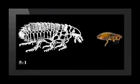Scale is a comparison of measurements between a real object and the representation or drawing of the object. If we look at the flea and its drawing, the scale is 5 to 1. This means that the drawing or representation is 5 times bigger than the real flea. It also means that every 5 millimeters on the drawing represents 1 millimeter on the real flea.